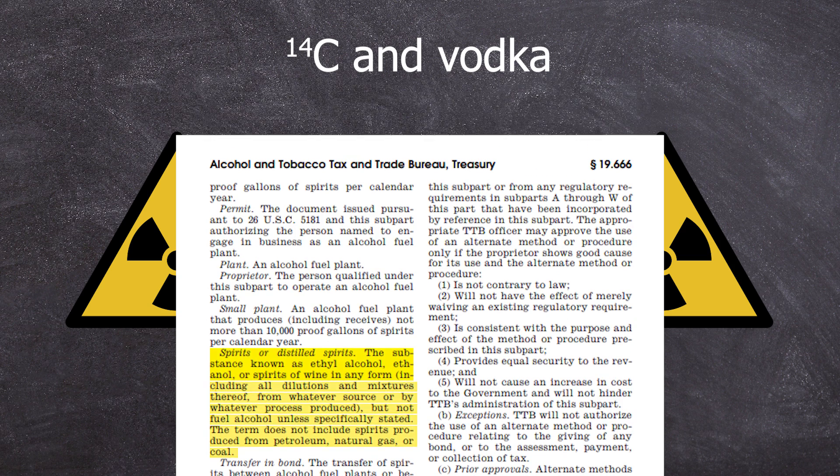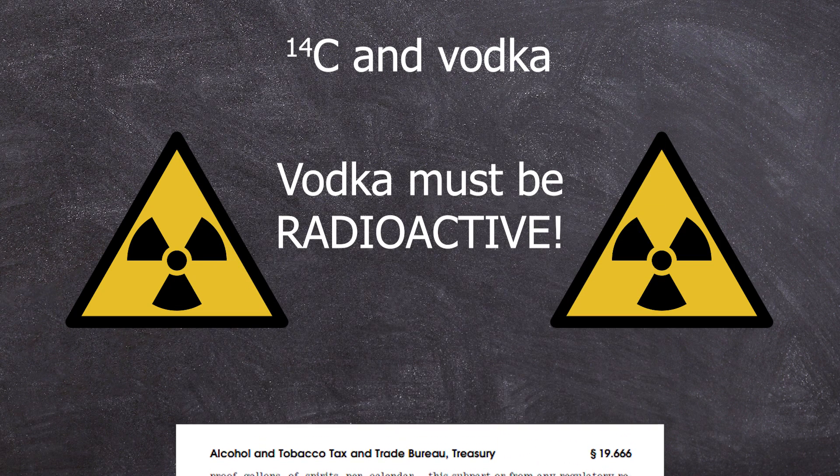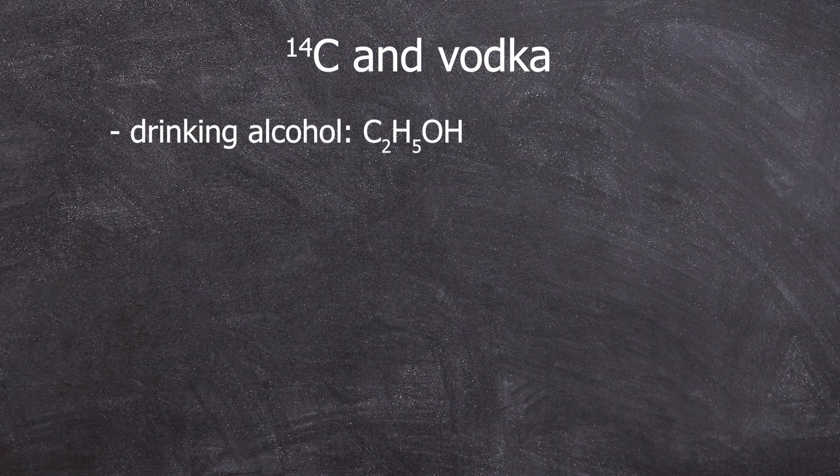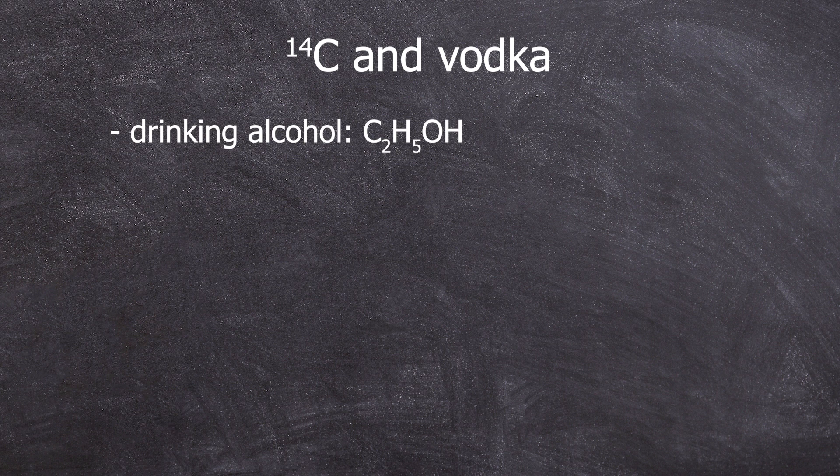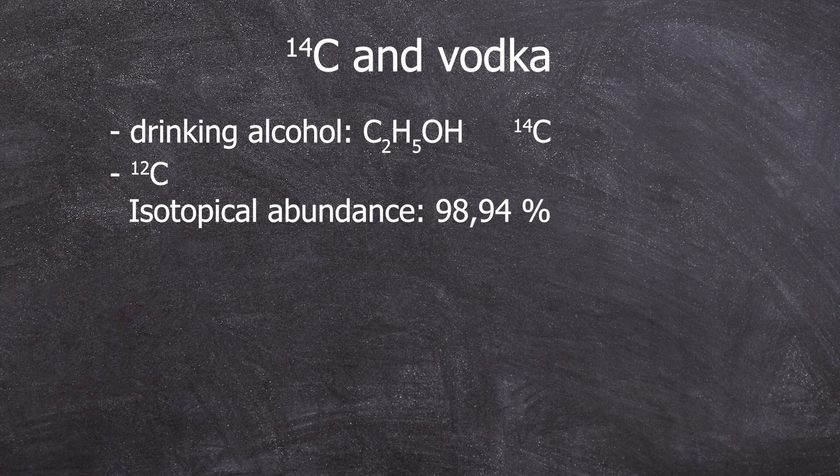The alcohol for drinking is described by the chemical formula C2H5OH. It is a carbon-containing molecule and can contain radioactivity in the form of cosmogenically generated carbon-14 isotopes. Normally, the carbon in C2H5OH is the carbon-12 isotope.